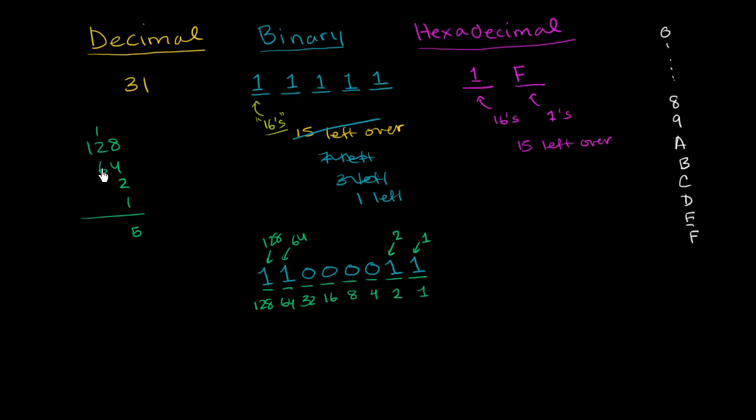1 plus 2 is 3, plus 6 is 9. And then you bring down the 1. So this is, this 11000011, in base 10, in decimal, in a decimal number system, is 195.